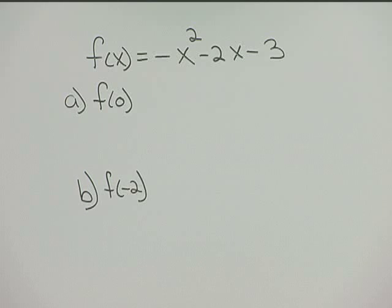For f of x equal to negative x squared minus 2x minus 3, for part a let's find f of 0, and for part b let's find f of negative 2.